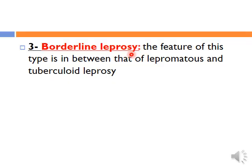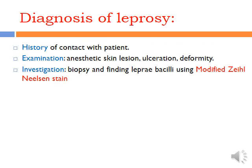In borderline leprosy, features are intermediate between lepromatous and tuberculoid leprosy — a mixture of both. Diagnosis of leprosy is by history, examination, and investigation, which involves finding lepra bacilli inside macrophages using modified Ziehl-Neelsen stain.